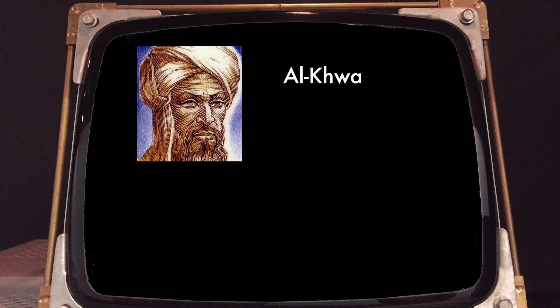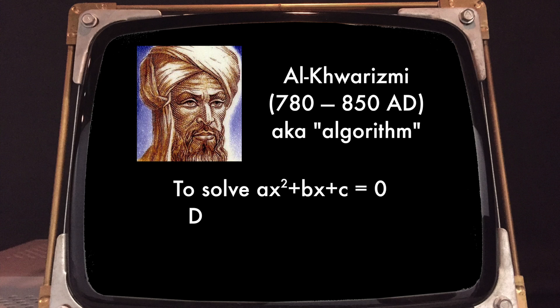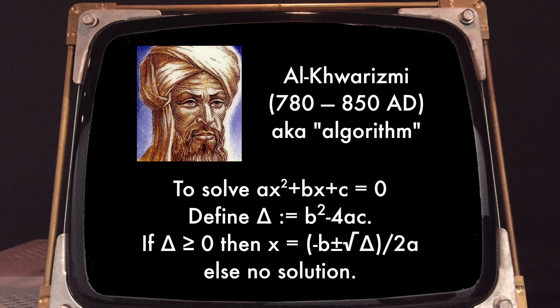This is something mathematicians started working on a very long time ago, and they called it 'algorithm' because the first person who formalized this notion was called Al-Khwarizmi himself. His full name was Muhammad ibn Musa al-Khwarizmi. Al-Khwarizmi described a very precise algorithm to solve a whole class of problems called second degree equations. The details don't really matter — that was a long time ago, the 8th century.